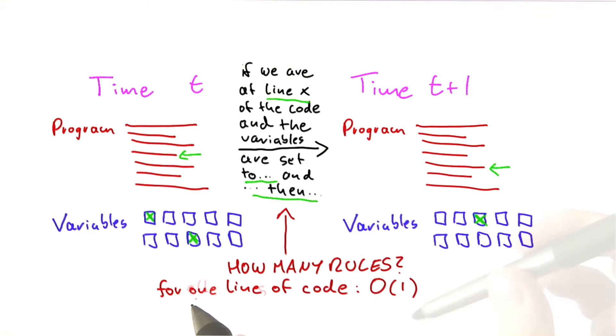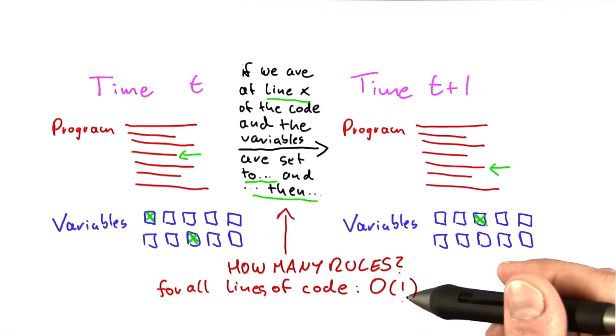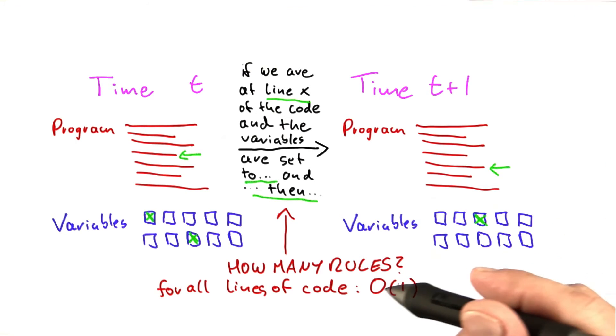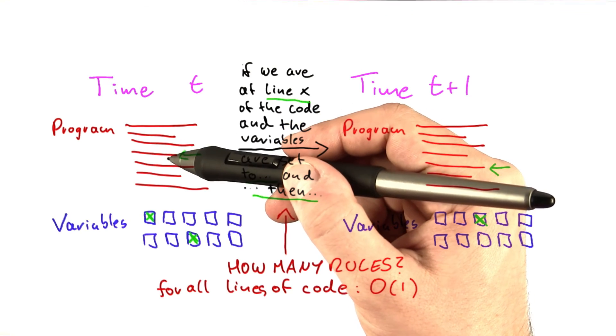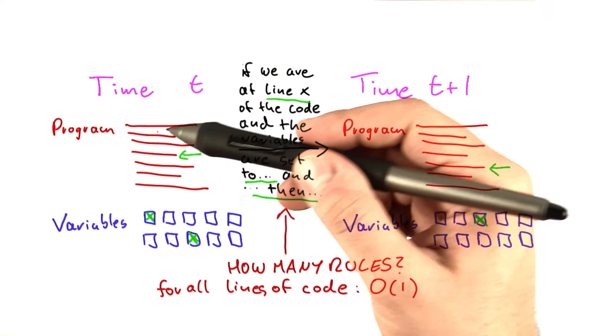Now, if we're not looking at one line of code but all lines of code, then this actually doesn't change because we have a constant number of possibilities for each line in the code, and the program has constant size, just as before.